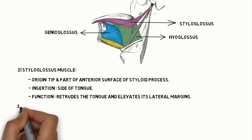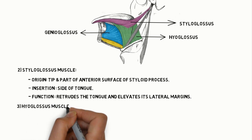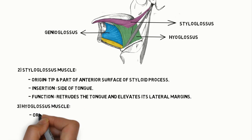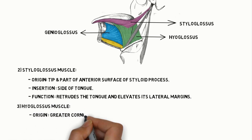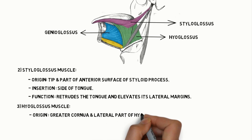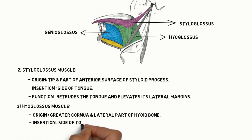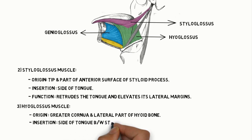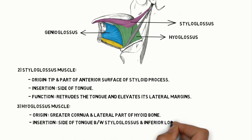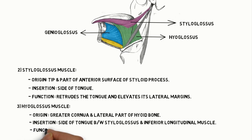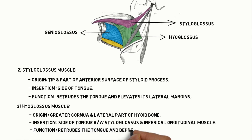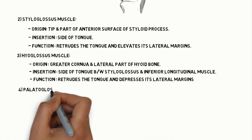Function of styloglossus: it retracts the tongue and elevates its lateral margins. Coming to the hyoglossus muscle, it originates from the greater cornu and lateral part of the hyoid bone. Insertion: side of the tongue, between the styloglossus and inferior longitudinal muscle. Function: it retracts the tongue and depresses its lateral margin.